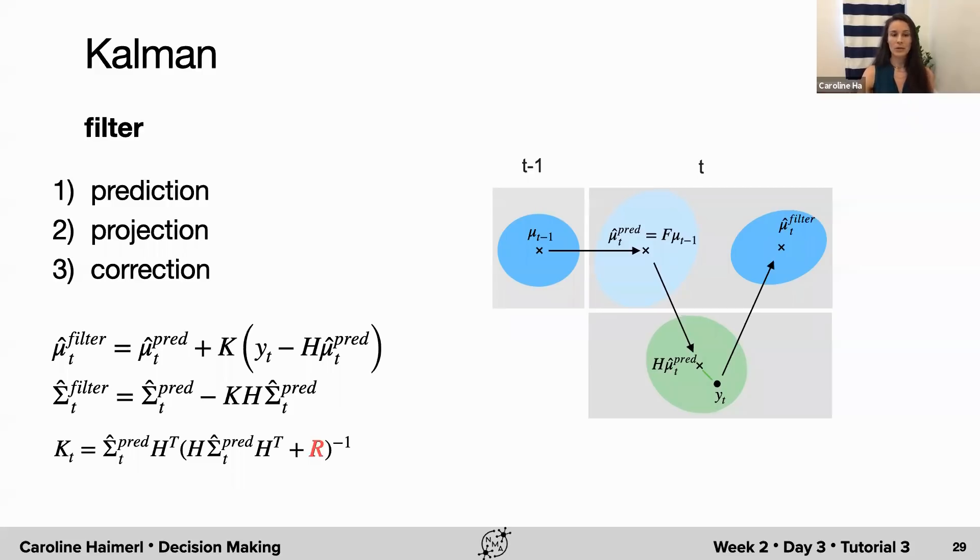If the measurement noise R is small, we have a large gain and heavily rely on the data. If R is large, so we're not very certain about our data and we think we have a lot of noise, we only make a small correction based on the data. Mostly, we're going to rely on the prior in that case.